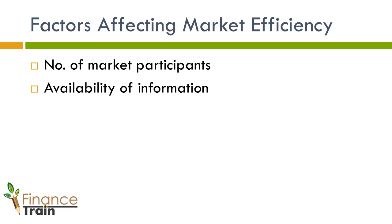The second factor affecting market efficiency is the availability of information. A higher availability of information will lead to higher market efficiency. For example, information is more easily available in large exchanges such as NYSE, which makes them more efficient compared to smaller exchanges where information may not be disseminated as easily. The type of transactions also affects market efficiency. For example, in over-the-counter markets, the information will not be available easily, which makes them inefficient. The information should also be equally available to everyone — that's why companies are required to disclose the same information to everyone.